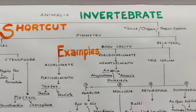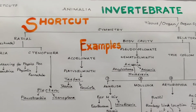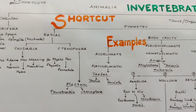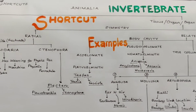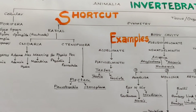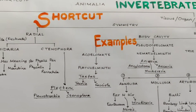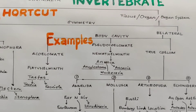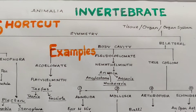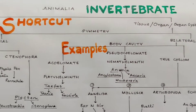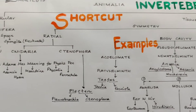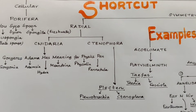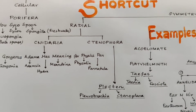The whole of animal kingdom has been divided into two categories depending on their level of organization. One is cellular level, another is tissue level, or organ level, or organ system level of organization. In case of cellular level of organization, we have only one phylum — Porifera.